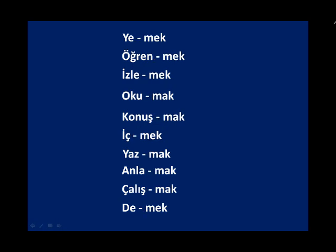Now, watch what I'm going to do. I've separated the verbs from their infinitive suffixes. The infinitive suffixes, as I said, were '-mek' and '-mak'. If you separate them, you get the basic part of the verb, which is called the root. So 'ye' is the root of yemek, 'öğren' is the root of öğrenmek, and so on.